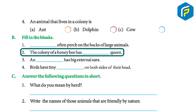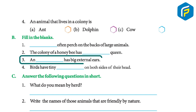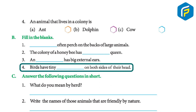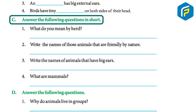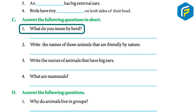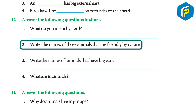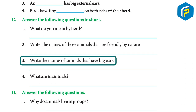Fill in the blanks: One, egrets often perch on the backs of large animals. Two, the colony of a honeybee has one queen. Three, an elephant has big external ears. Four, birds have tiny holes on both sides of their heads. Answer the following questions in short: A herd is a group of animals that has a leader who guides the other members and warns them of danger. Cats, cows, and dogs are friendly by nature.